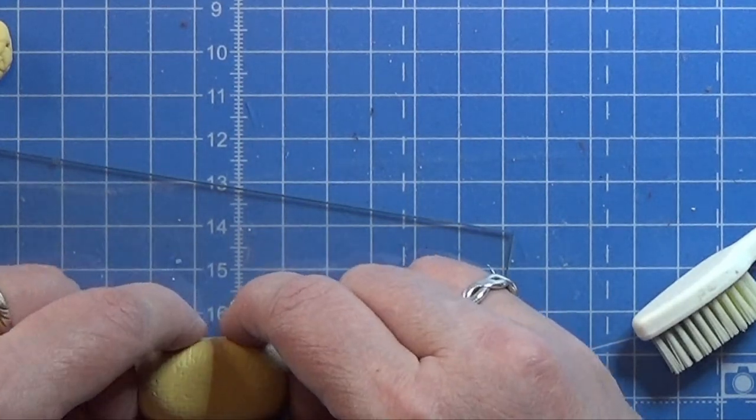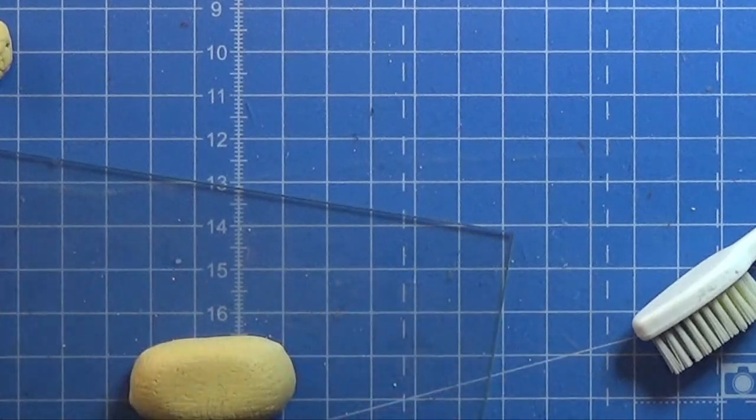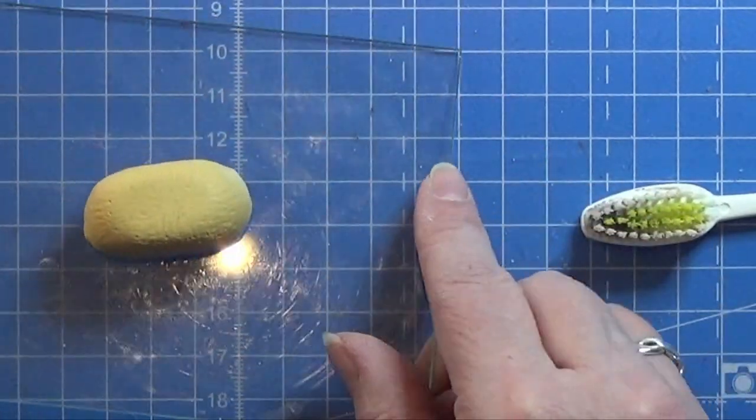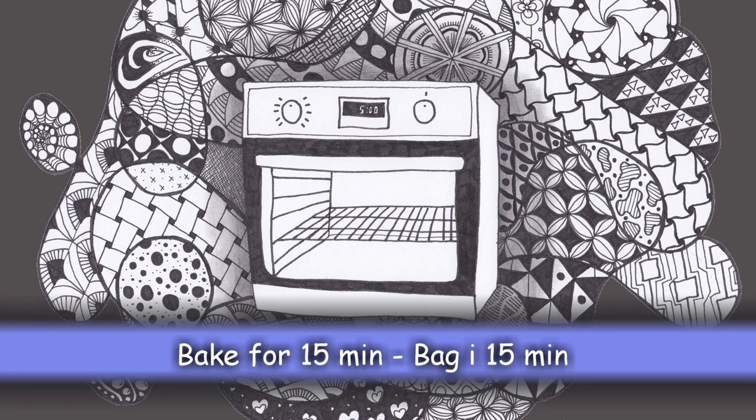If you don't have it you can use a toothbrush or something else to give it a bit of texture. When you're ready and you like the basket's look you just bake it.